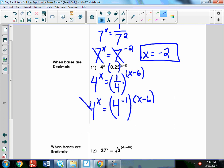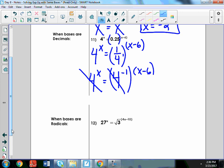So, now my bases are the same, and then you just have to distribute. So, I have x equals, and this will be negative 1 times x, so negative x, and then negative 1 times negative 6 is positive 6.